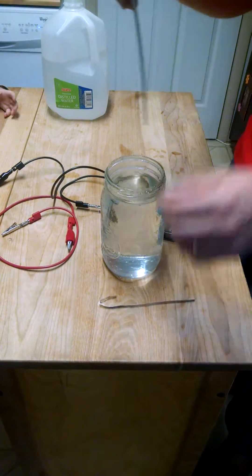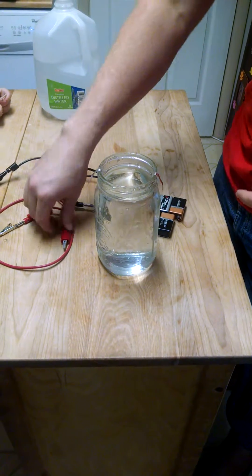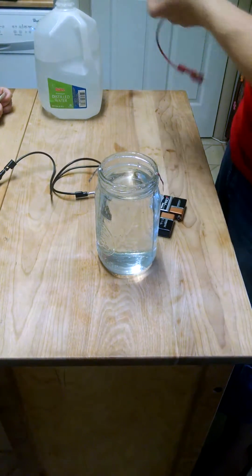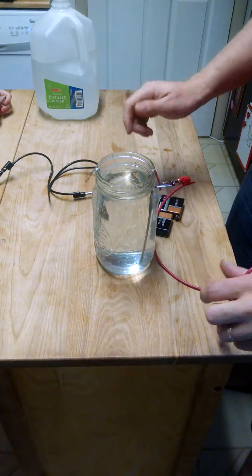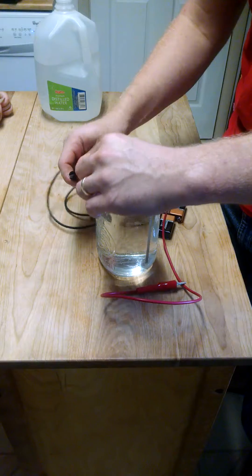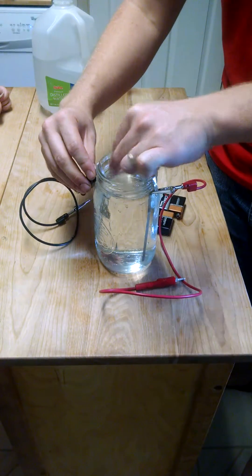And then all you need to do is place your leads in the water so they're not touching each other, otherwise you'll spark an arc and then it won't do the electrolysis. So you hook up black to one, red to the other, whatever color you're using.